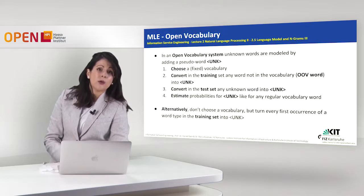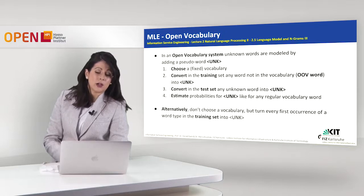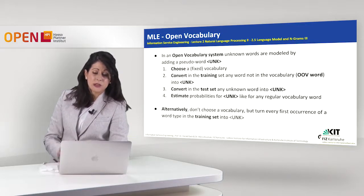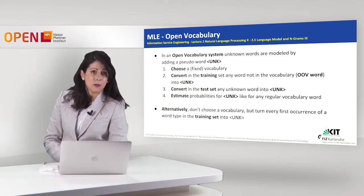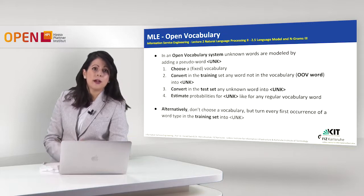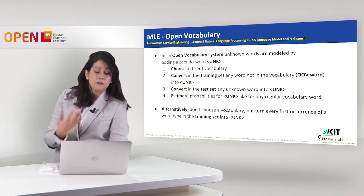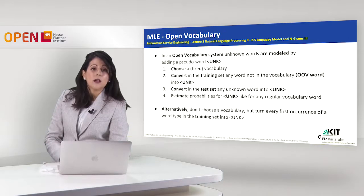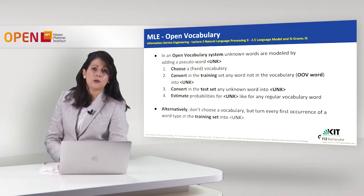In an open vocabulary system, any unknown word is modelled by adding the pseudo-word UNK. How do we proceed? One way is to first choose a fixed vocabulary, then convert any unknown word in the training set to UNK, train our model, and then in the test set again convert any unknown word to UNK. Last, estimate the probabilities of UNK like we do for any other regular word. An alternative is not to choose a fixed vocabulary, but to turn every first occurrence of a word type in the training set into UNK.